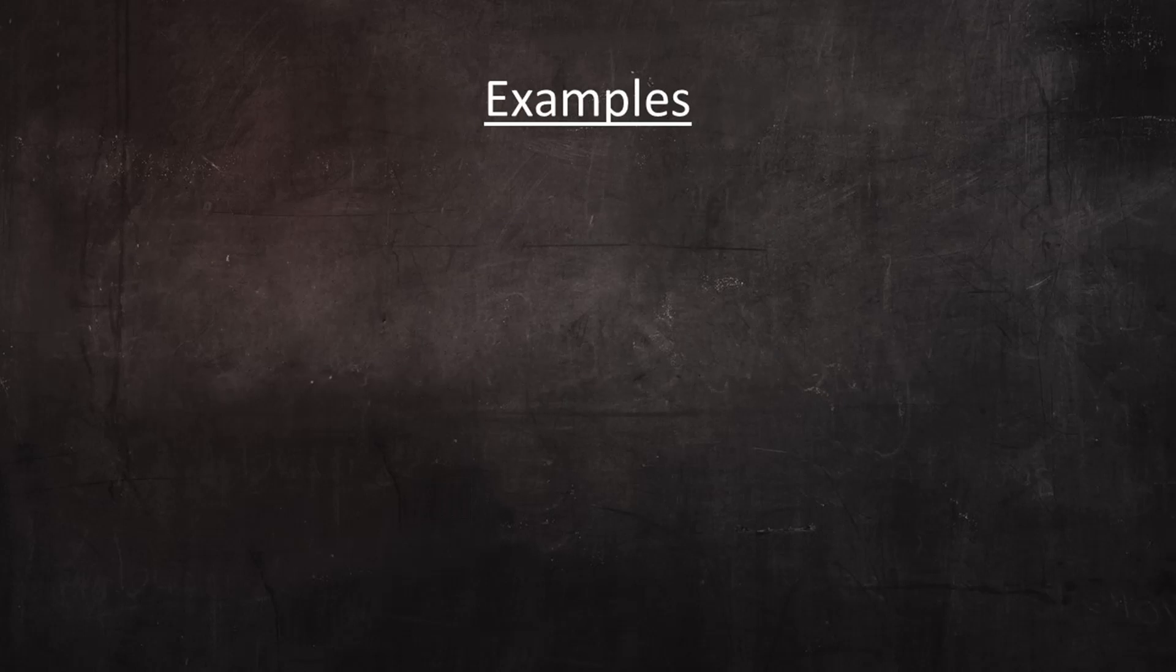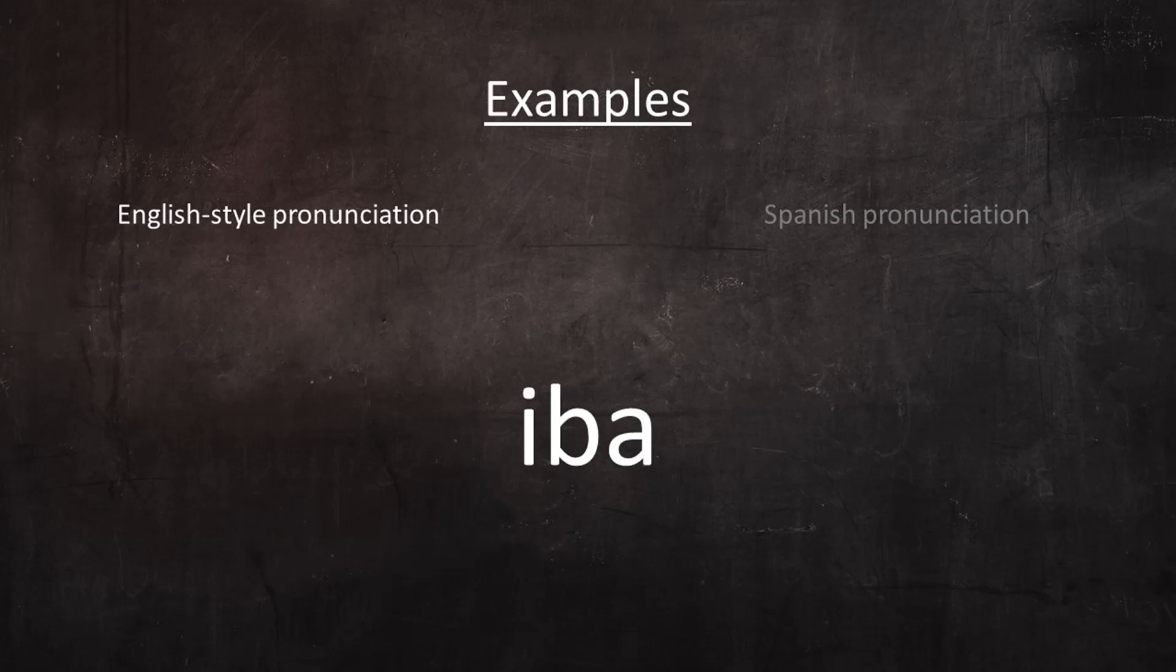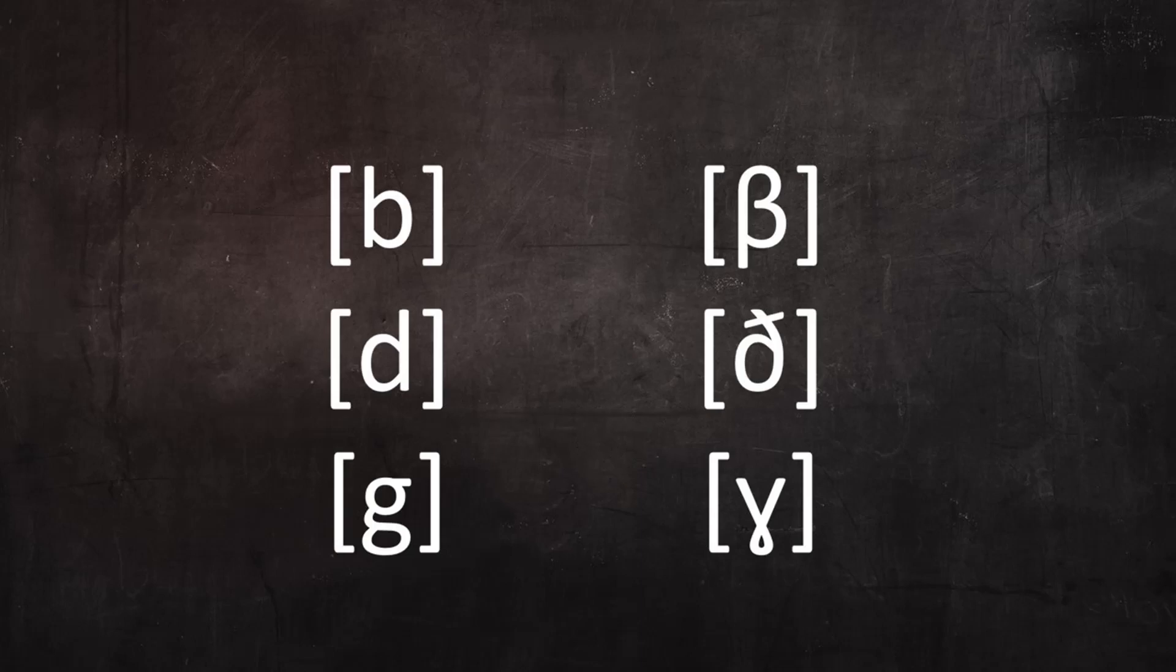Here are three Spanish words pronounced first with English-style pronunciation, then with more accurate Spanish pronunciation. Observe that the more accurate versions sound softer because B and G are pronounced as approximants and D is pronounced as an interdental fricative rather than as a stop. Iba. Iba. Nudo. Nudo. Igo. Eagle. So the Spanish voiced stops are actually pronounced as approximants or fricatives in most phonetic contexts, which makes them sound much softer than native English speakers would expect.